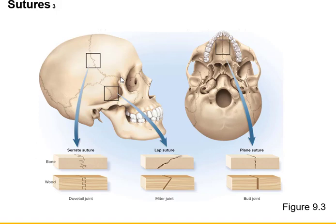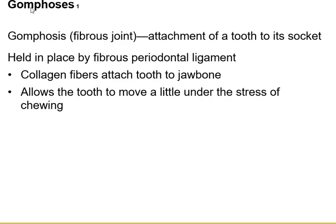The squamous suture connects the temporal, parietal, and frontal bones. Gomphoses are where you put your tooth down into the socket and hold it in place with collagen fibers — that's why it's one of the fibrous joints.